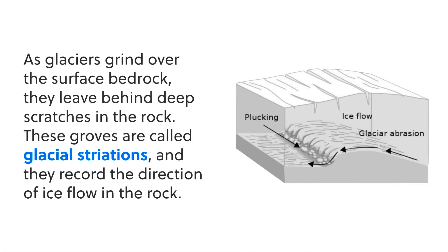As glaciers grind over the bedrock, they scratch it. They leave behind marks and grooves that are called striations. These striations are important because they reveal the direction that the ice was moving before it melted.